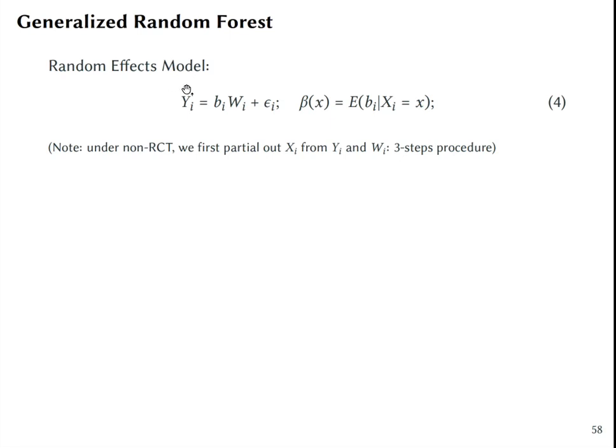So you regress Y on Wi, and you allow the treatment effect to vary for each individual. Note that if we are under non-RCT conditions, meaning that there can be confounders between W and Y, we first partial out the controls from Y and W, and then return back to this as a third step.